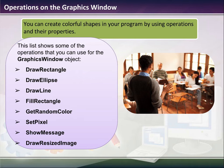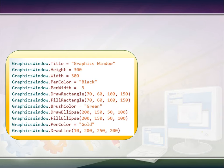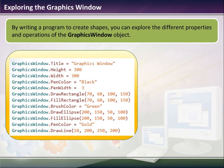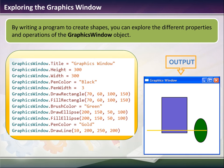You can create colorful shapes using operations such as DrawRectangle, DrawEllipse, DrawLine, FillRectangle, GetRandomColor, SetPixel, ShowMessage, and DrawResizeImage. Let's go through a sample program line by line. The first line is the title of the window, the second is the height, the third is the width. The pen color is set to black, the pen width to three, then we draw and fill a rectangle. Next we set the brush color to green and draw and fill an ellipse, then switch the pen color to gold and draw a line.